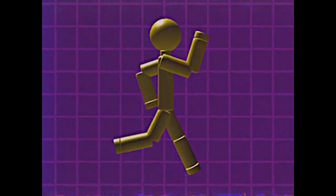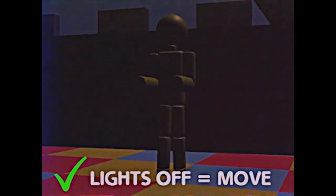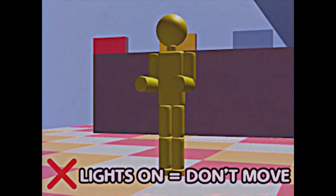The rules are simple. The lights will turn off and you can move through the obstacle course at this time. However, when the lights turn on, you can look around but cannot move. You may move again once the lights turn back off.